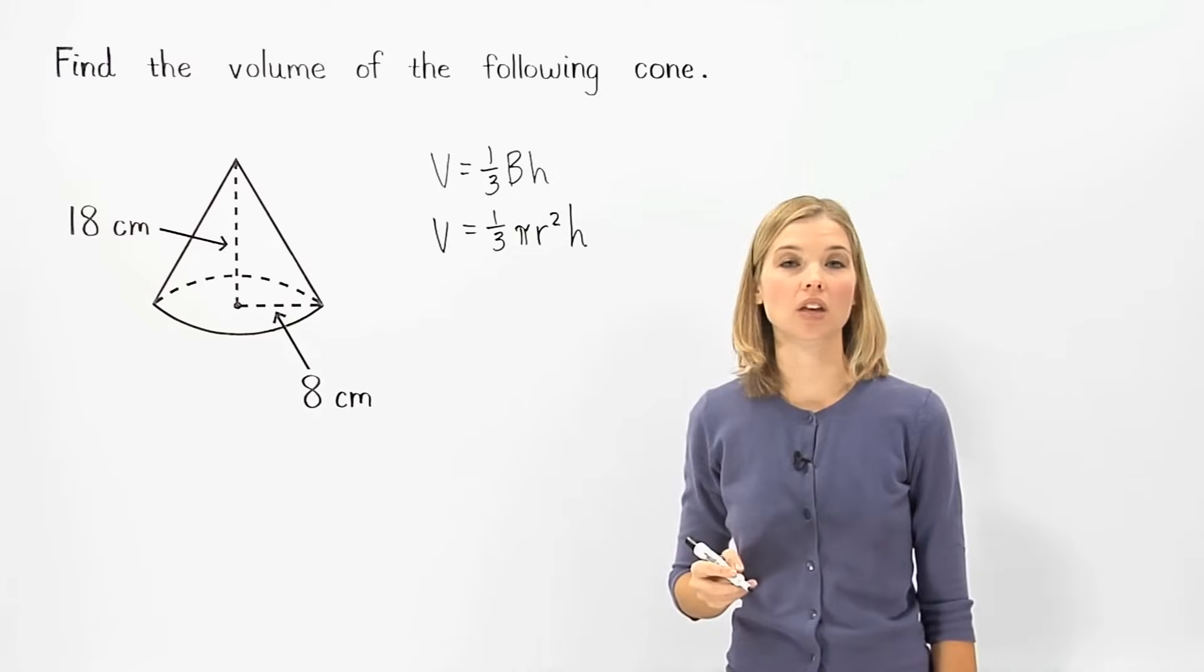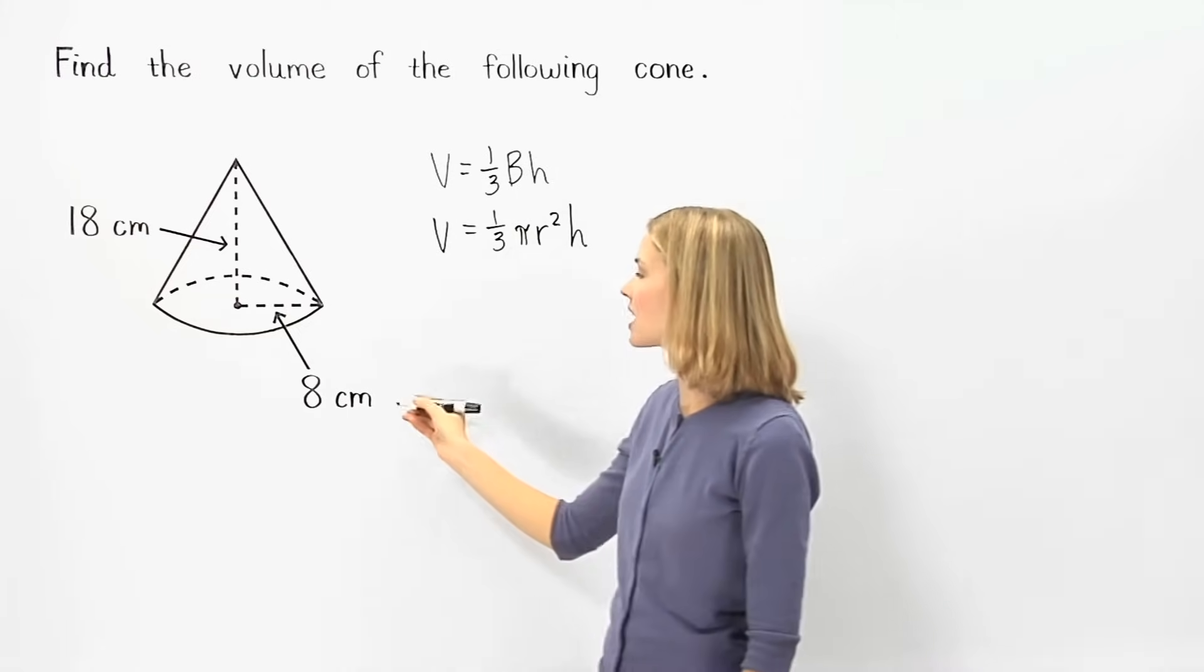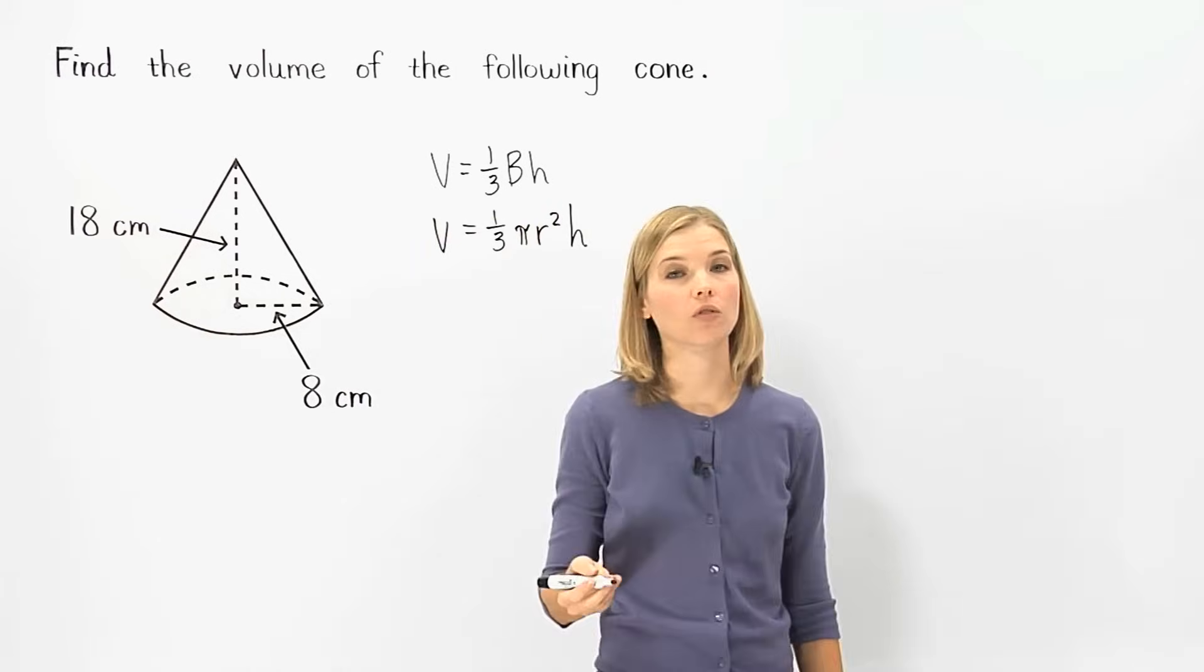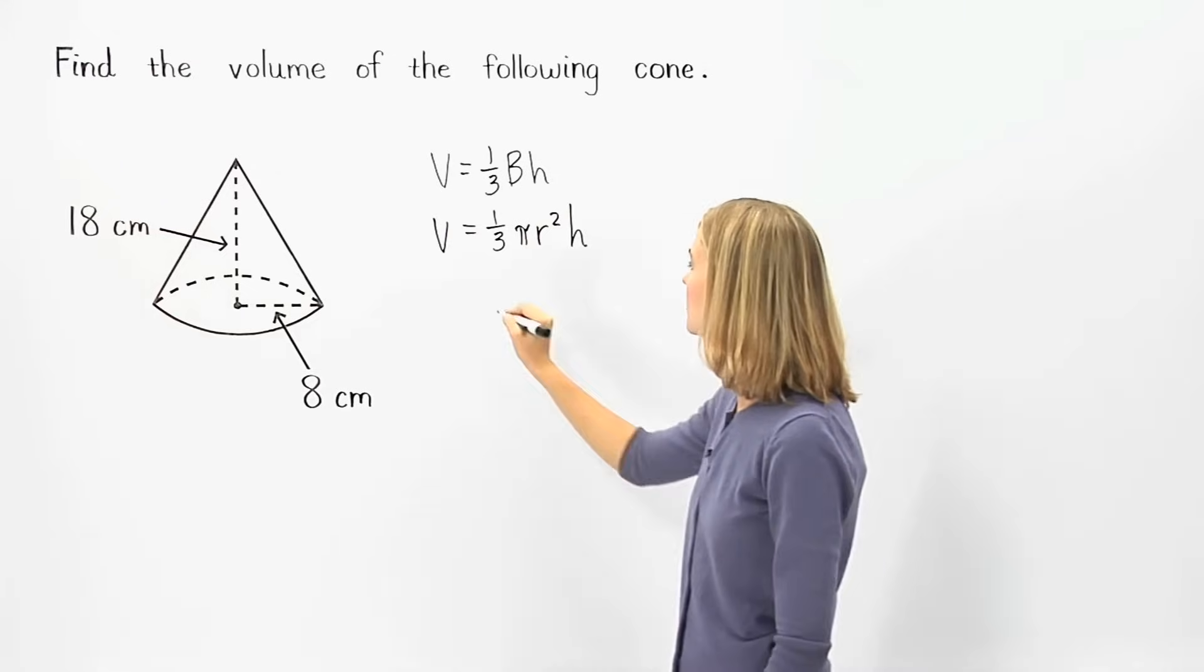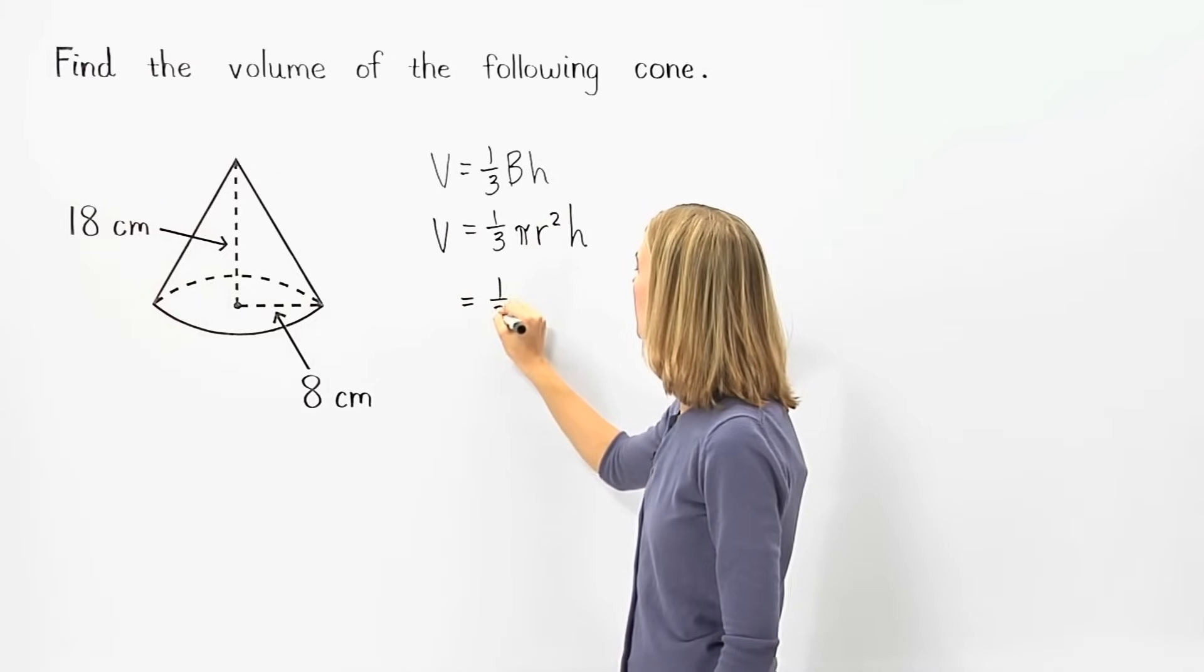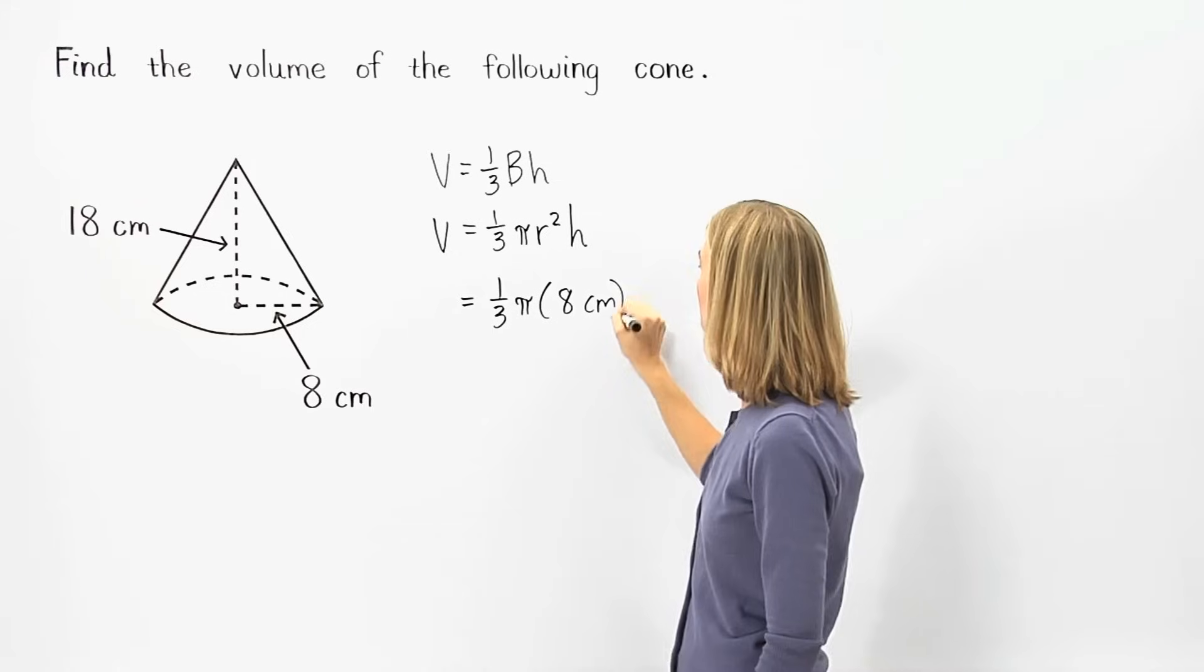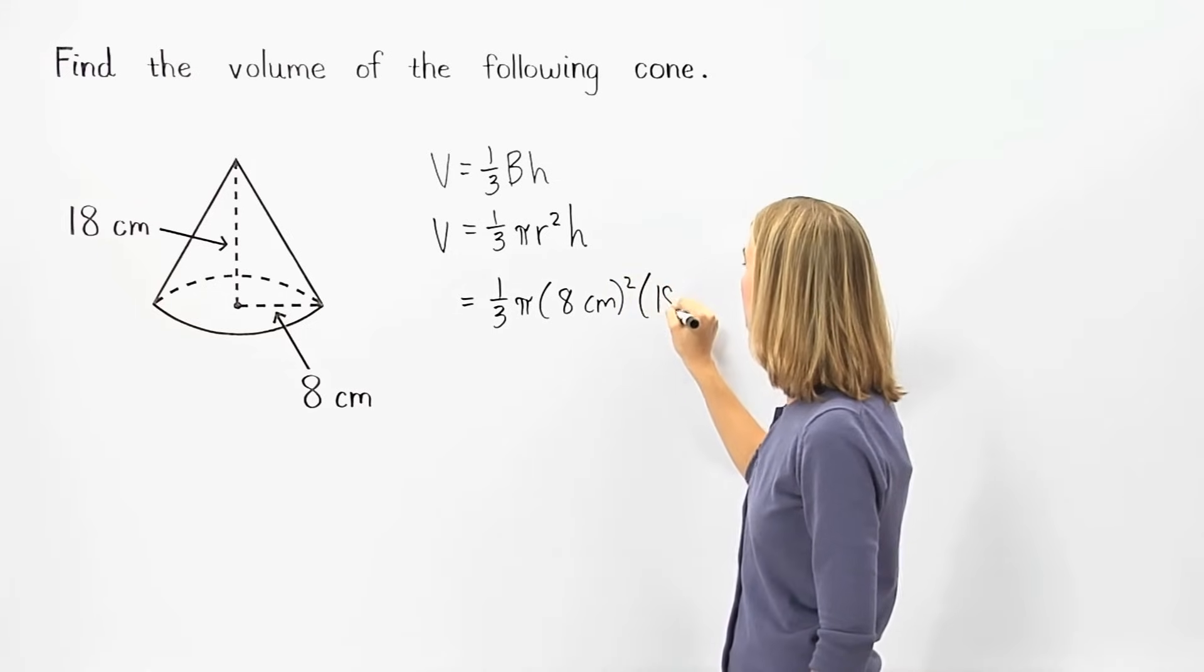So to find the volume of the given cone, since the radius is 8 centimeters and the height is 18 centimeters, we can plug this information into the formula to get one-third pi times 8 centimeters squared times 18 centimeters.